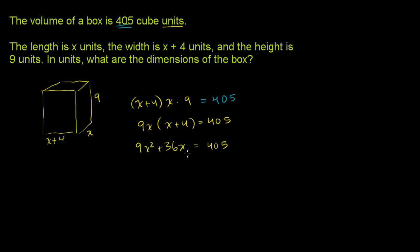Now, we want our quadratic expression to equal 0. So let's subtract 405 from both sides of this equation. Your right-hand side equals 0, and your left-hand side is 9x squared plus 36x minus 405. Is there any common factor? Let's see, 405. 4 plus 0 plus 5 is 9, so that's divisible by 9. All of these are divisible by 9.